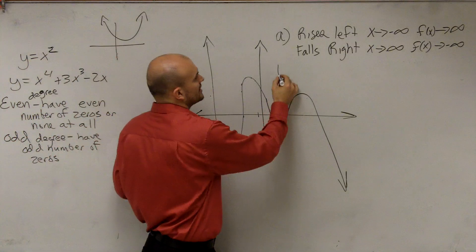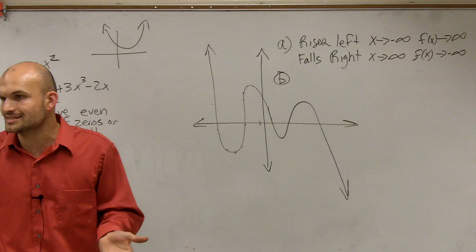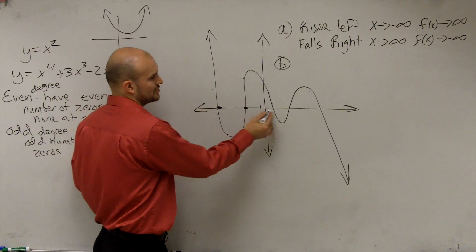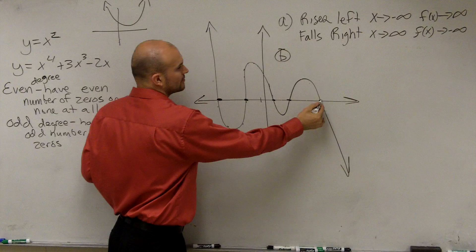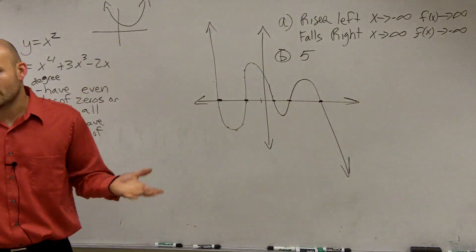Then part B is we need to list just how many zeros we have, how many roots, x-intercepts, right? So we just count all the x-intercepts we have. One, two, three, four, five. So we have five zeros.